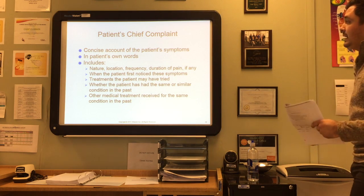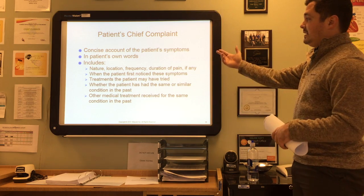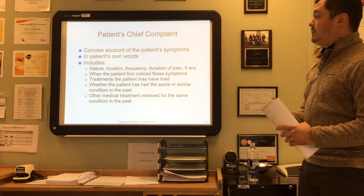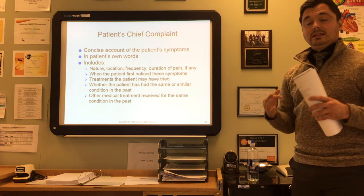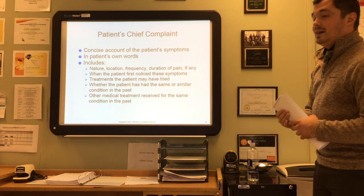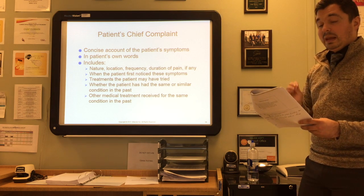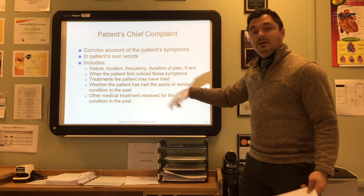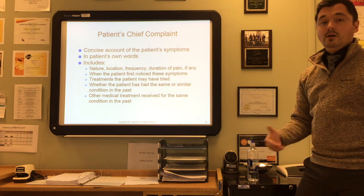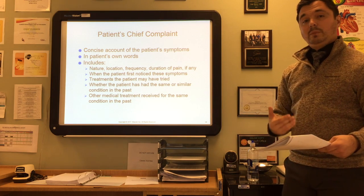The last component of subjective information is the patient's chief complaint — a concise account of the patient's symptoms in the patient's own words: why are they there, what is going on. It can include the nature, location, frequency, or duration of pain, when the patient first noticed the symptoms, treatments the patient may have already tried such as icing or ibuprofen, whether they've had the same condition before, and other medical treatments received for the same complaint. Most medical facilities use a pain scale of one to ten to determine the severity of the patient's pain, and that is considered subjective information because the patient is relaying it to you.